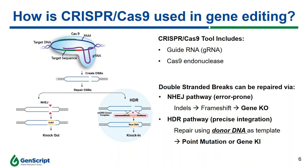Double-stranded breaks can be repaired through two different pathways: non-homologous end joining (NHEJ) or homology-directed repair (HDR). When there is no donor DNA template, the breaks are repaired through the error-prone NHEJ pathway, where random nucleotides around the break are deleted, causing indels that lead to frameshifts and gene knockout. When a donor DNA template flanked by long homology arms is present, the cell incorporates this template into one strand of the genome DNA and repairs the other strand to result in a knock-in event.